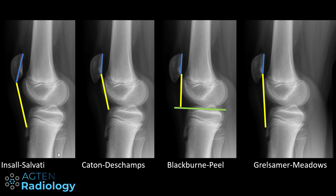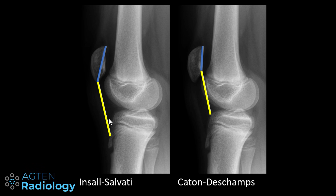The most frequently used measurements are the Insall-Salvati index and the Caton-Deschamps index. It doesn't really matter which one you use — just use the one your surgeon is also using. The main difference is the measurement to the tibial tuberosity. If a patient has Osgood-Schlatter disease or had surgery at that level, it might not be easy to find that point, giving a strange measurement. The advantage of the Caton-Deschamps index is that it is not related to the morphology of the tibial tuberosity, and it is also unaffected by a very large inferior pole of the patella.